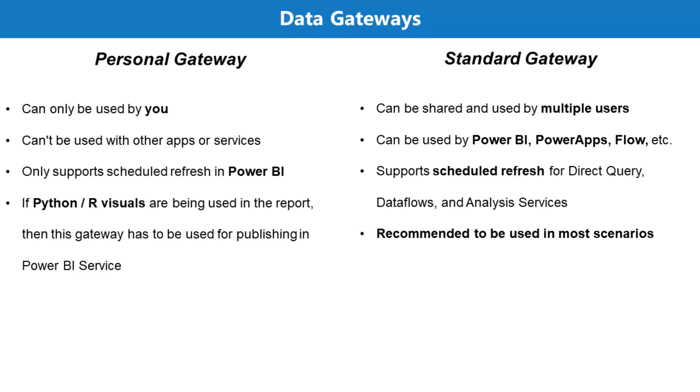There are two types of gateways: personal mode and standard mode, also called the on-premises data gateway. The personal mode can only be used by one person — if you have it installed on your machine, only you can use it. The standard mode gateway can be shared and used by multiple users.